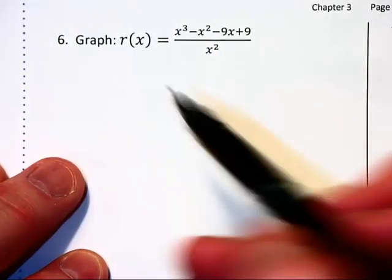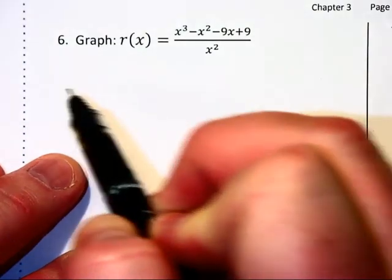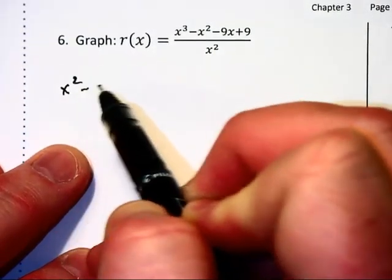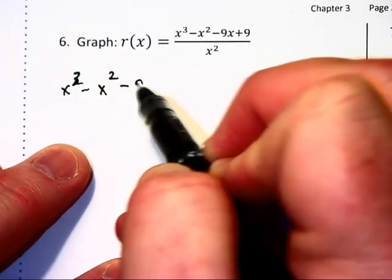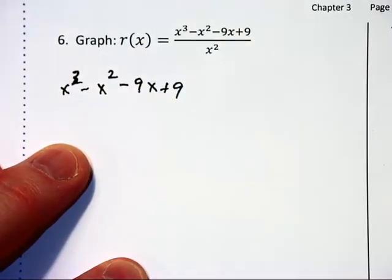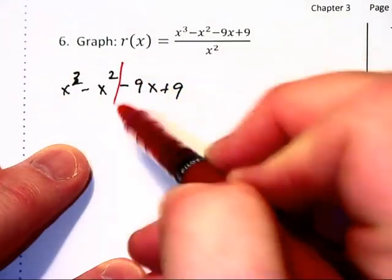This tells us we should try factoring by grouping. Let's take this x cubed minus x squared minus 9x plus 9, and group it by splitting it right down the middle.